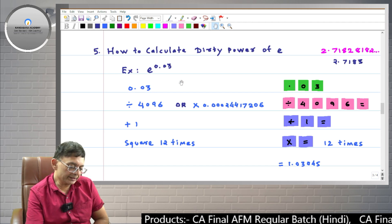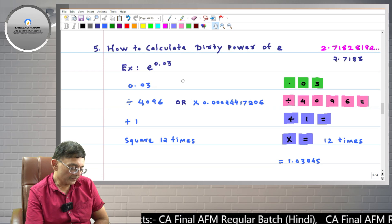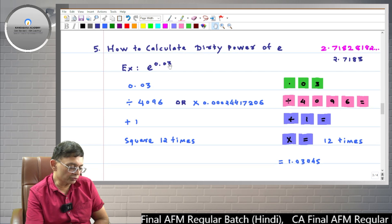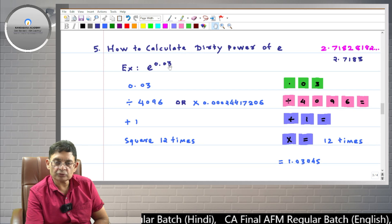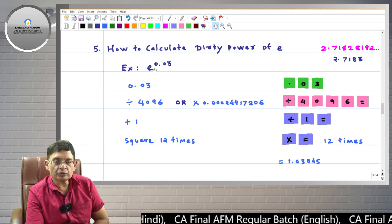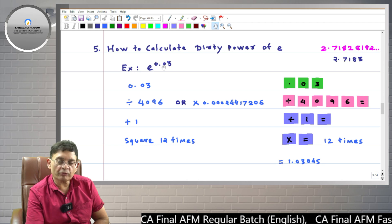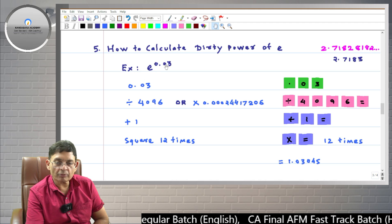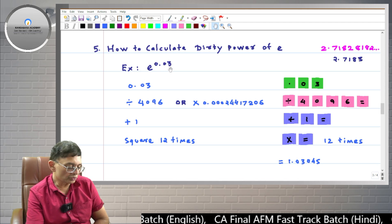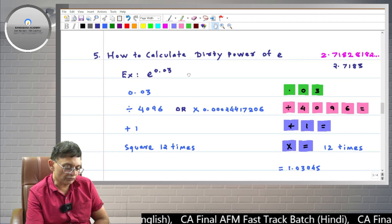So here we will take an example. Say we want to calculate E raised to 0.03. Here 0.03 is a fractional power; students also call it dirty power. Generally students need to calculate E raised to 0.01, E raised to 0.02, E raised to 0.12 and so on. So this is the fractional power calculation of E.